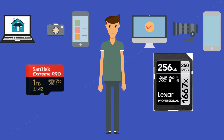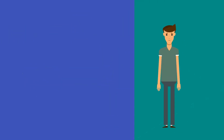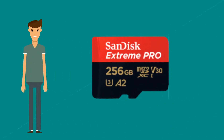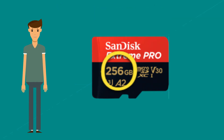You can determine this by looking at the card slot of your device. The easiest specification to understand is the storage capacity, which is represented in gigabytes, abbreviated as GB. It's easy to assume that the bigger the number, the better.